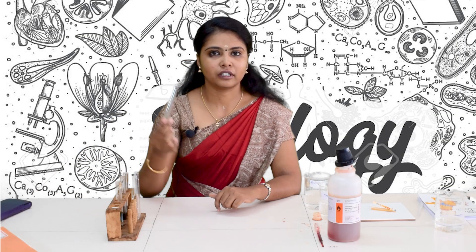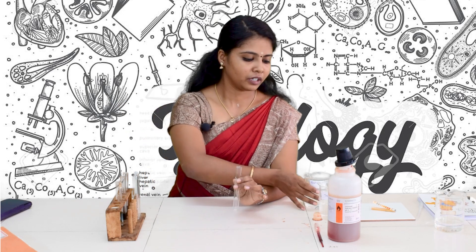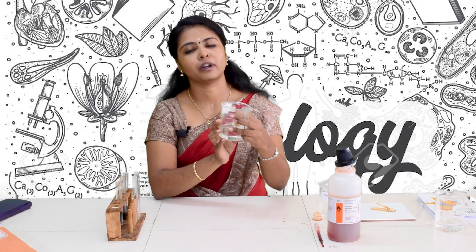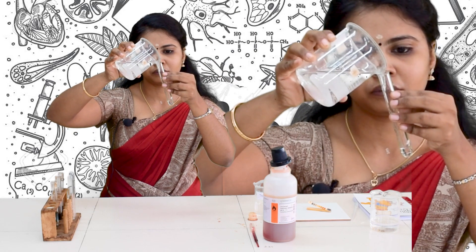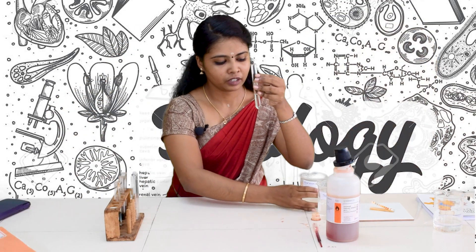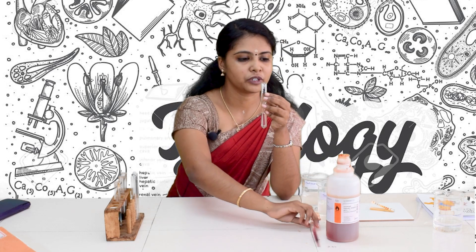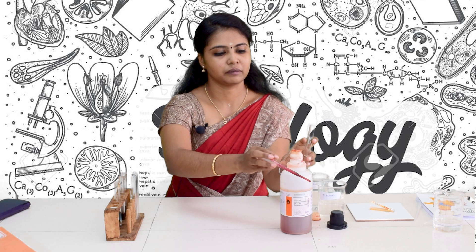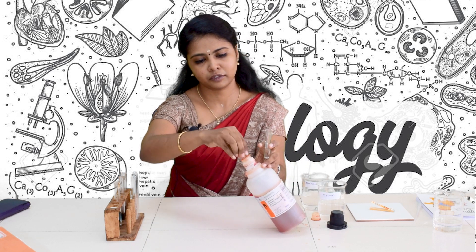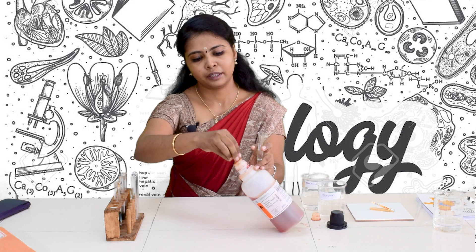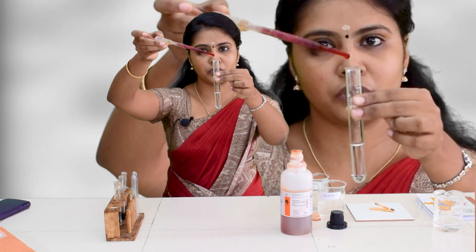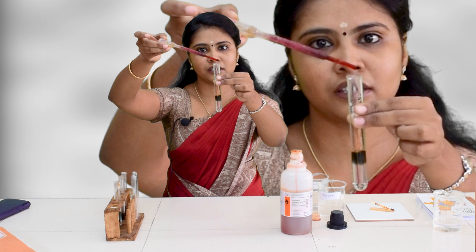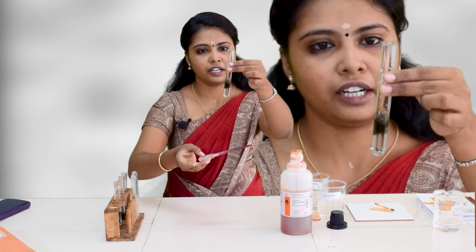First of all, take a clean test tube and add the water sample. We are taking pond water here. Then add one or two drops of the universal pH indicator into the sample solution. Observe carefully — see the colour difference. The colour of the pond water has changed to green.